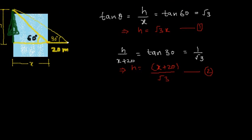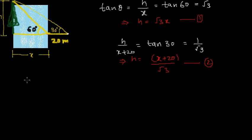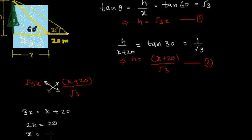Both of these equations actually give us the value of h. That means root 3 times x is actually equal to x plus 20 divided by root 3. And if I cross multiply, I will get 3x is equal to x plus 20, or 2x is equal to 20. That means x is equal to 10 meters.